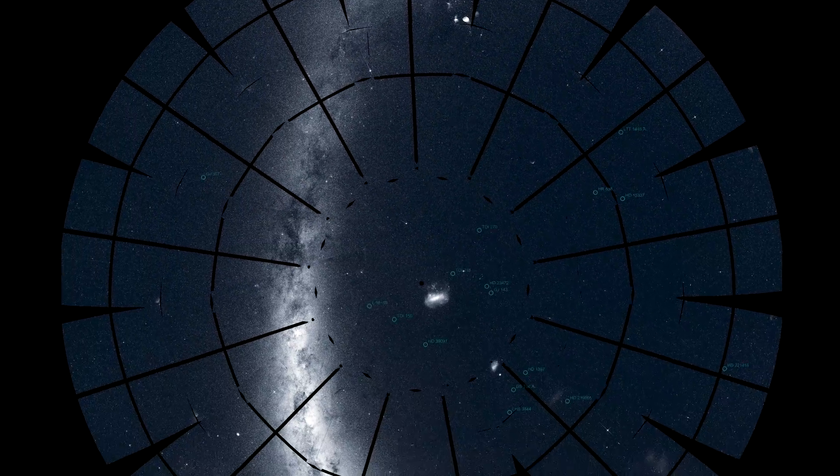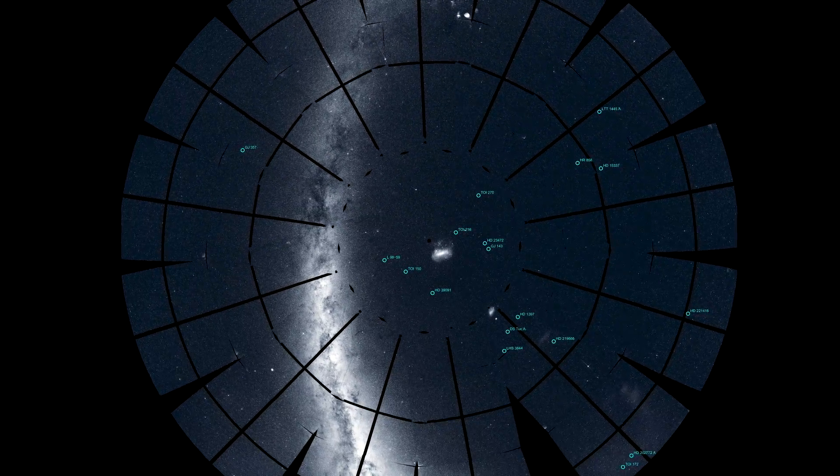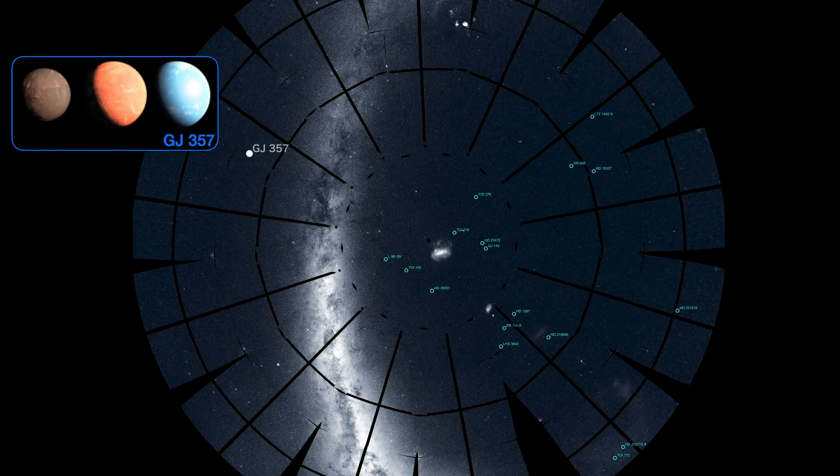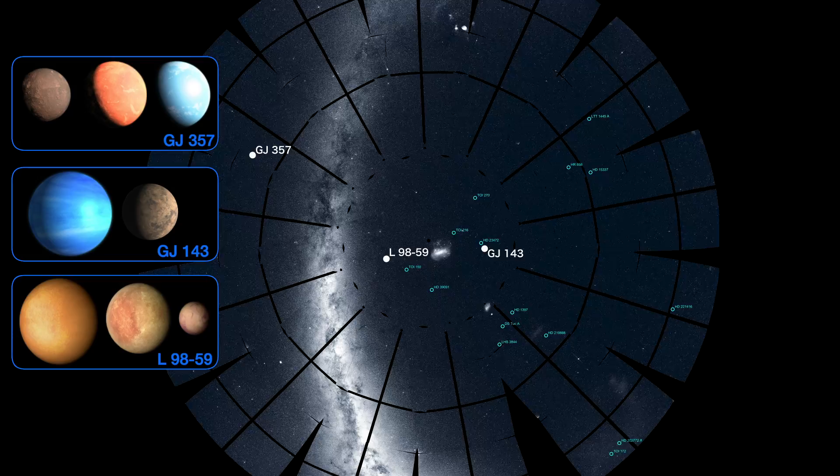TESS's confirmed exoplanet discoveries are currently distributed all around the southern sky. Many of these discoveries are actually multi-planet systems, and several are Earth-size.